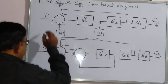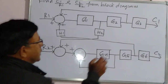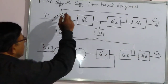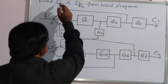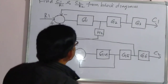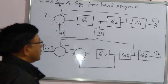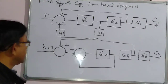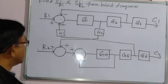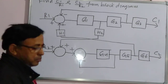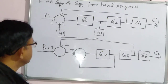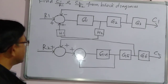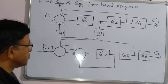There are two inputs given: R1, R2, and two outputs C1, C2. We have to find out C1/R1 and C2/R2 from the block diagram. To find C1/R1, we have to assume that R2 and C2 will be zero. Similarly, to find out C2/R2, we have to assume that R1 and C1 will be zero.